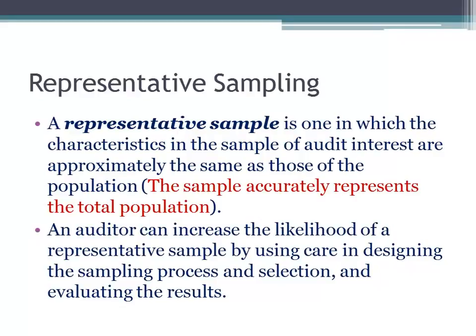You're going to start with the cash disbursements journal and select a sample of items from the cash disbursements journal, and tie those back to the three documents discussed. You also want to make sure that your sample includes the entire population — that when you're making that sample selection, you have the entire population represented.